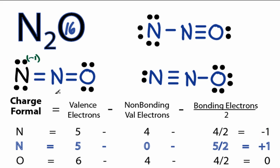For the nitrogen in the center, we have 5 valence electrons. All of the valence electrons are bonding, so that's 0. We have a total of 2, 4, 6...